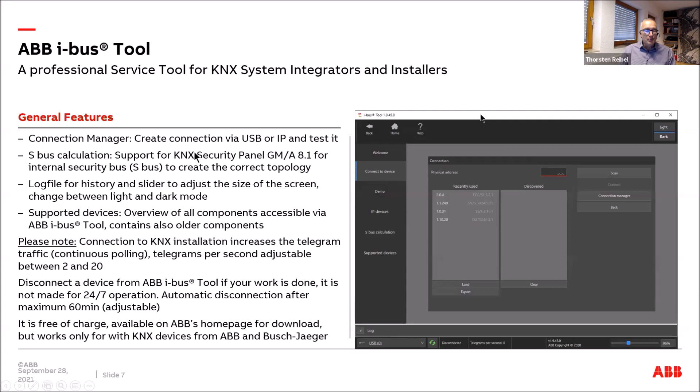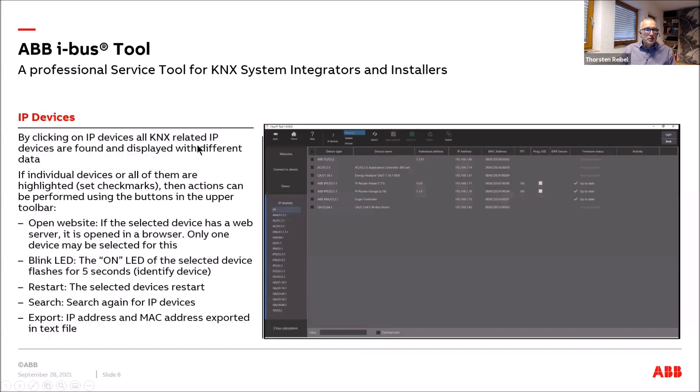The iBAS tool is free of charge and works only with ABB iBus KNX devices, meaning ABB plus Busch-Jaeger, which also belongs to ABB. Clicking on 'IP Devices' on the left side shows all KNX-related IP devices on the network — such as IP routers and the ABB energy meter — displaying their IP addresses, MAC addresses, and status.